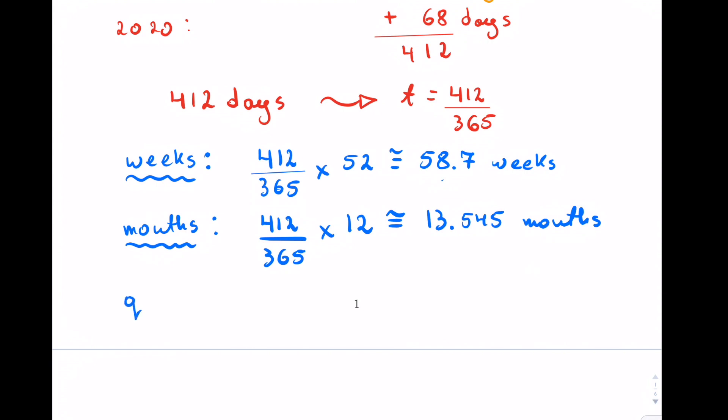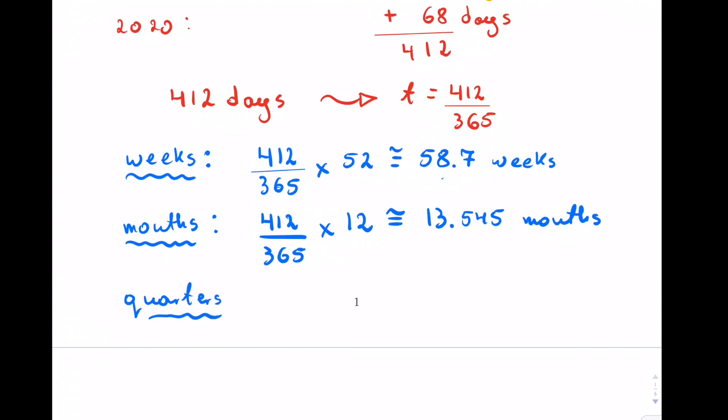Finally, quarters. If we want to find that, you can still take the number of years and multiply by four quarters in a year. So approximately 4.515 quarters.